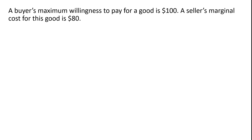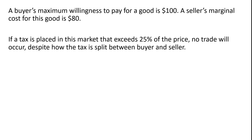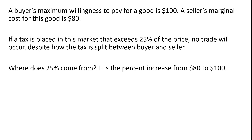With the same setup, if a tax is placed in this market that exceeds 25% of the price, no trade will occur regardless of how the tax is split between the buyer and seller. Where does this 25% come from? It is the percent increase from $80 to $100 — using the percentage change formula, going from 80 to 100 is a 25% increase. So any sales tax that exceeds 25% will result in no trade and a deadweight loss.